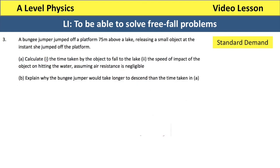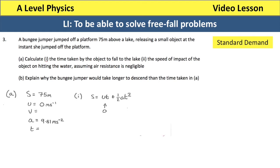Question three. A bungee jumper jumped off a platform 75 metres above a lake and released a small object at the instant she jumped. Part one is to calculate the time for the object to fall to the lake. We write down SUVAT: it falls 75 metres, it was released from rest, and it accelerates due to gravity so A is 9.81. We use S equals UT plus a half AT squared, which simplifies to S equals a half AT squared since U is zero. Rearranging gives T equals root of 2S over A. Substituting gives root of 2 times 75 divided by 9.81, which gives 3.9 seconds.